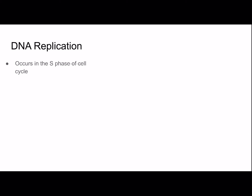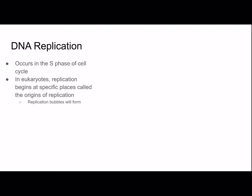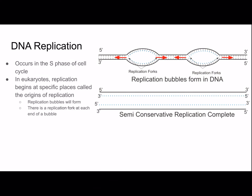DNA replication occurs in the S phase of the cell cycle — remember the S phase of interphase. In eukaryotes, replication begins at specific places called origins of replication. Replication bubbles will form, with a replication fork at each end of the bubble. These bubbles form and expand in opposite directions at the replication forks in order to separate the two strands.